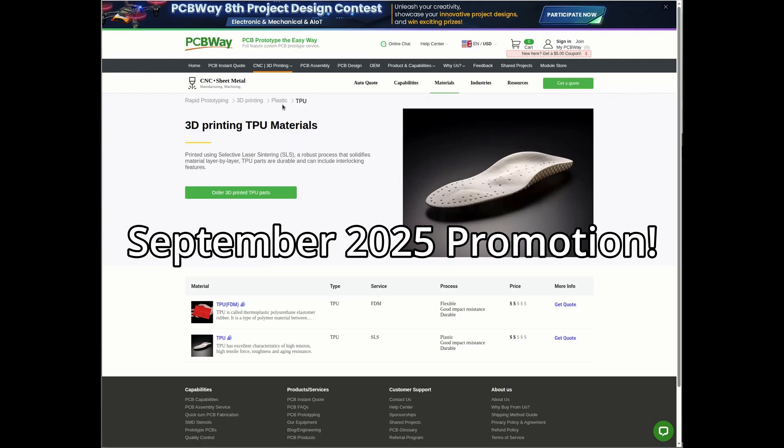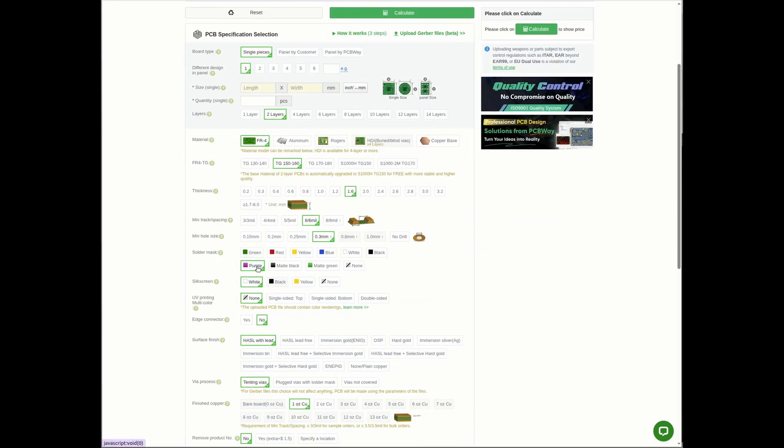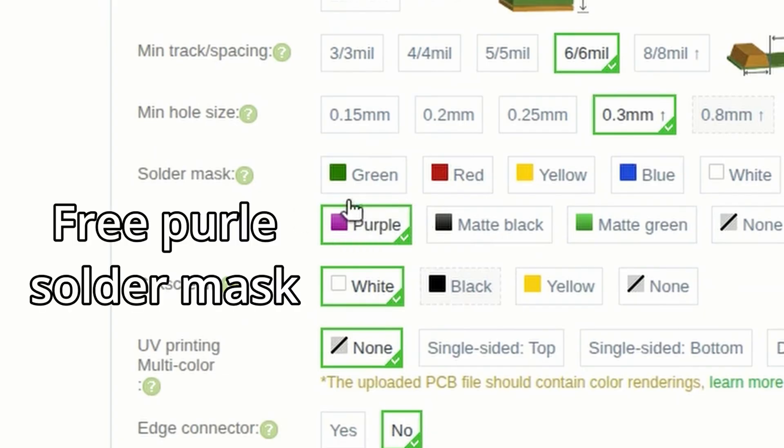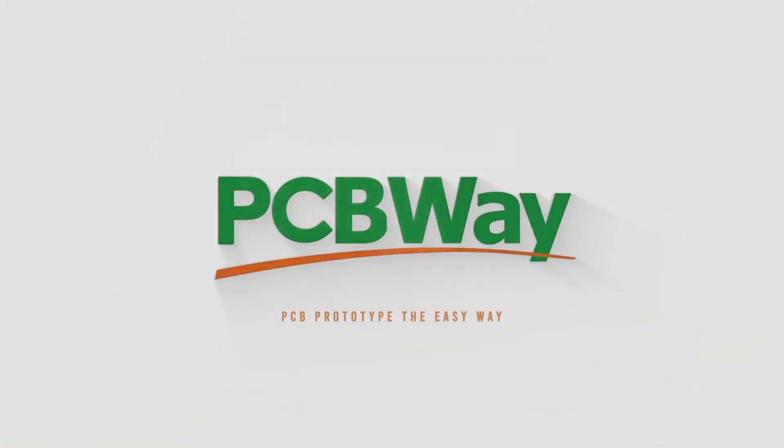And there is a huge promotion for this month, September. First is the TPU FDM printing, which is a soft plastic material. If you order more than 64 grams, you will get incredible 80% off discount, just paying only 20%. And the second is the free purple solder mask on PCB, so you can choose the purple solder mask without extra costs. So why not try PCBWay for your next project?